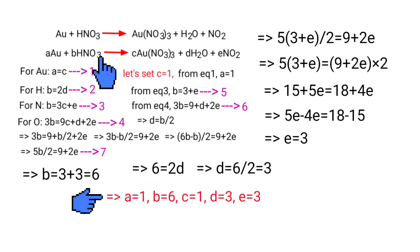Now you can apply the a, b, c, d, e values in equation 3. So Au plus 6HNO₃ gives us Au(NO₃)₃ plus 3H₂O plus 3NO₂.